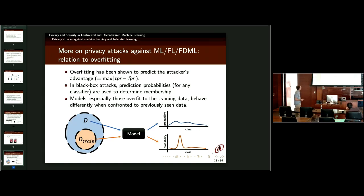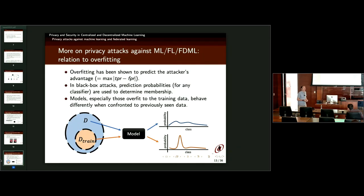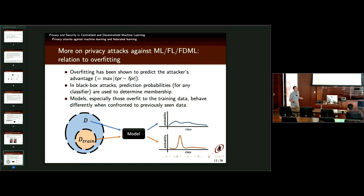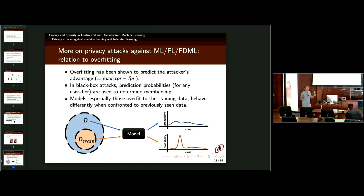Many of these privacy problems have to do with overfitting — learning too well the training data. In French this is called 'sur-apprentissage,' overlearning. It's like a student who learns only the exercises given by the professor, and when given different exercises at the exam, has no clue. Overfitting has been shown to predict the attacker's advantage. If the model learned the training data so well, seeing the trained model is like seeing the training data.